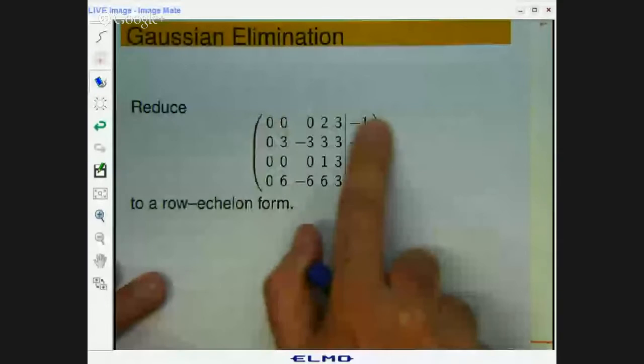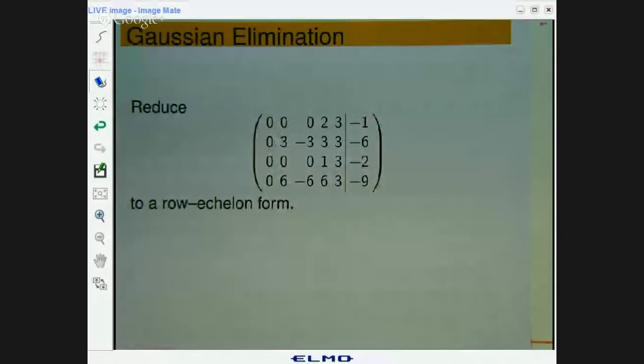So I'm going to step you through another example that involves Gaussian elimination. Now that's just an algorithm that produces a row echelon form of a matrix, which is nice because we can read off some of the solutions to our problem. So let me share my screen with you. Right, so this is the example we're going to look at. Reduce this matrix here to a row echelon form.